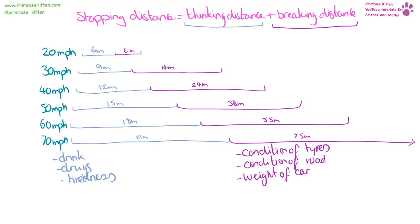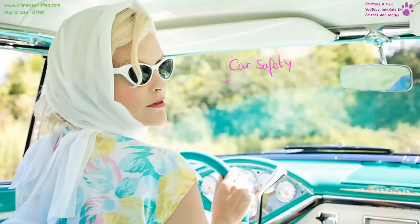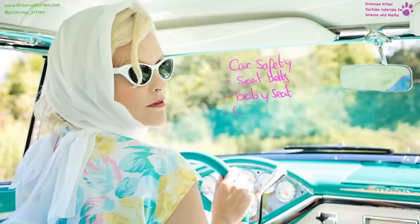Factors affecting braking distance: tyre condition — new tyres stop much quicker than worn tyres with less grip. Road condition — a snowy or icy road gives a longer braking distance. Weight of the car — a heavier car takes much longer to stop. Car safety features include seat belts, baby seats, crumple zones at the front, and airbags.